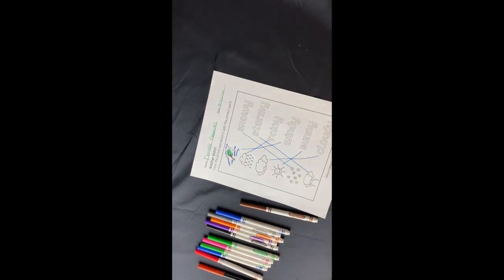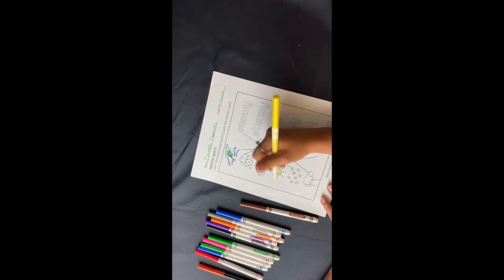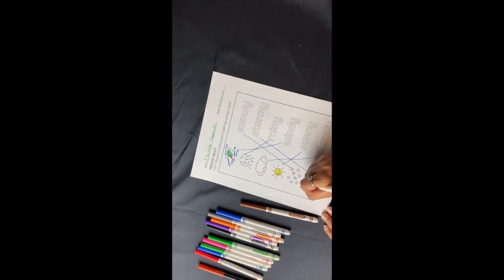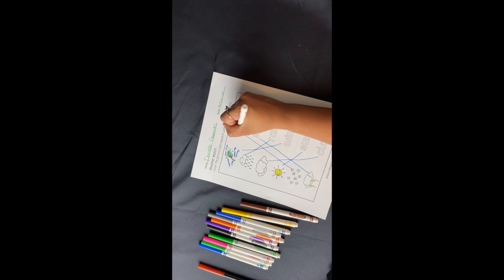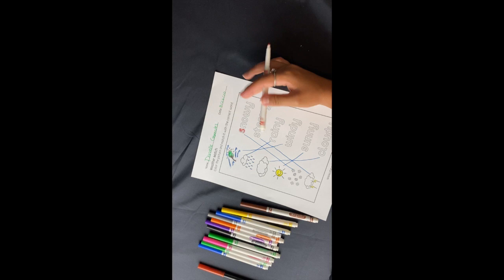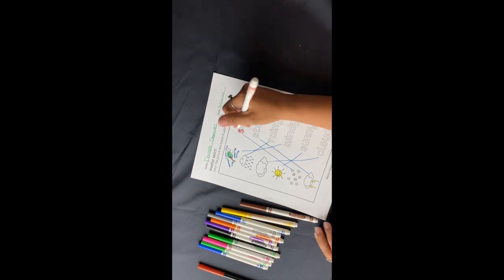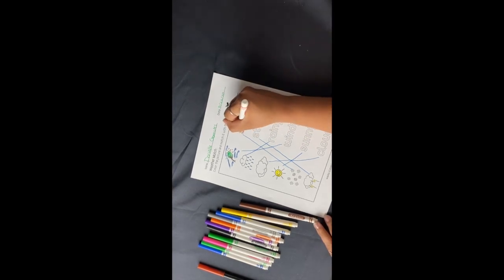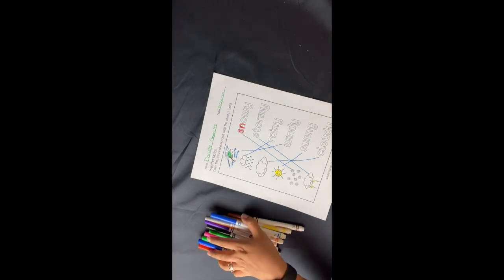And then after this worksheet is done, we will go on to a science experiment explaining rain. So that is kind of the gist of this. It just gives them a chance to color and to re-learn the material, and it gives them time doing something they're not normally used to doing.